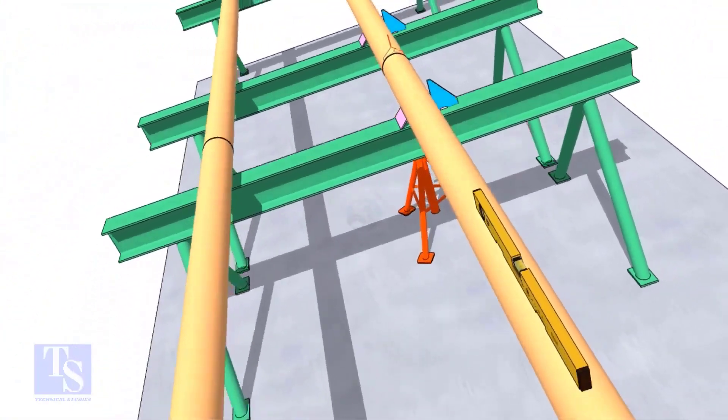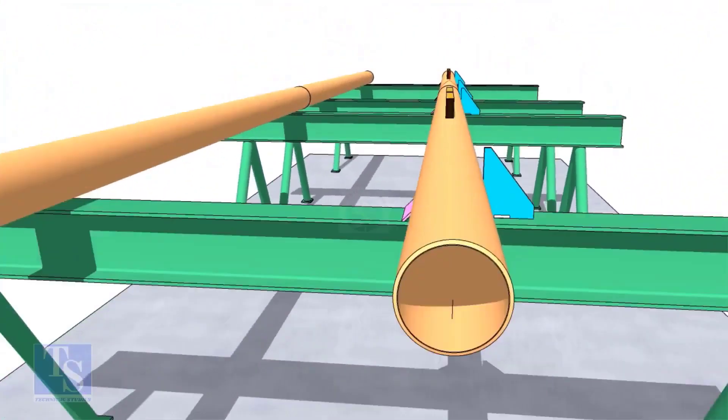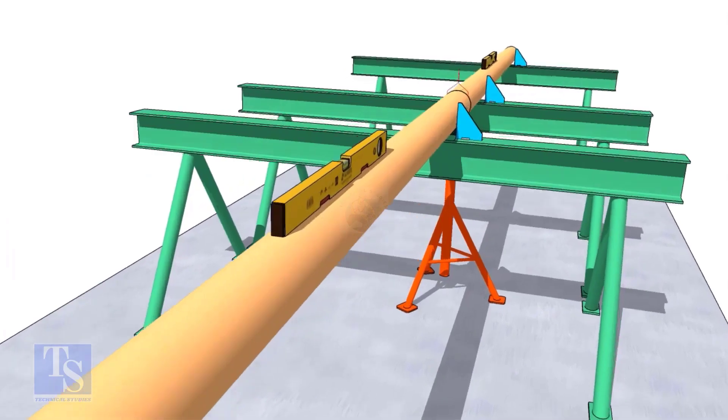Check the straightness of the pipes by looking from one end of the pipes. This is the best way to check the straightness.